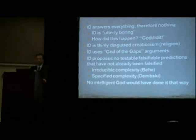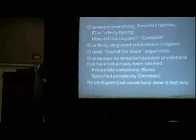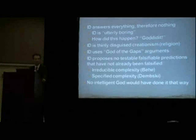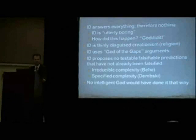The next argument is that intelligent design uses the God of the gaps argument, which is a logical fallacy, and so therefore it's non-scientific. And the next one is that intelligent design proposes no testable, falsifiable predictions that have not already been falsified. For example, irreducible complexity proposed by Behe has been falsified — things are reducible, nothing's irreducibly complex. And specified complexity proposed by Dembski has also been falsified. Nature can produce very specified levels of complexity just as easily as anything.